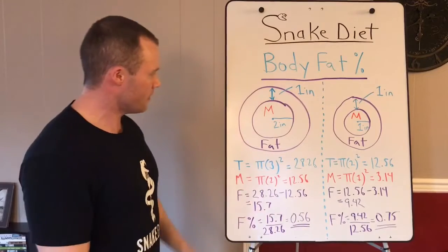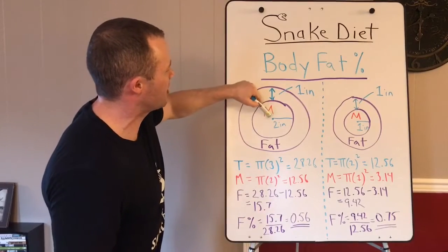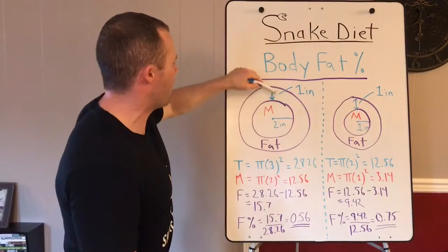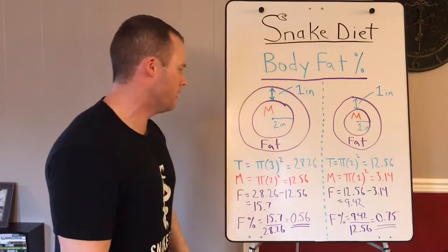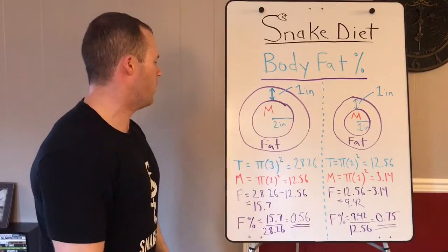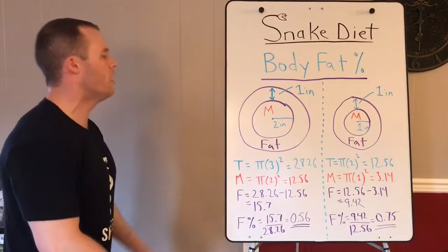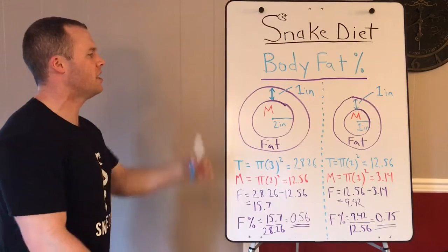The inner circle represents muscle on both guys. The very outer circle represents fat. So here's how we're gonna do it. I'm gonna show you how the body fat percentage is way lower on the big guy even though you can pinch the same amount of fat on their abs.